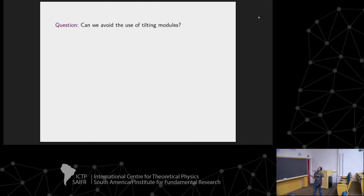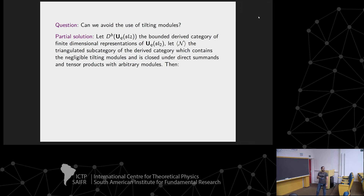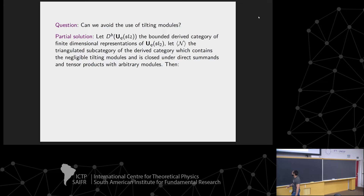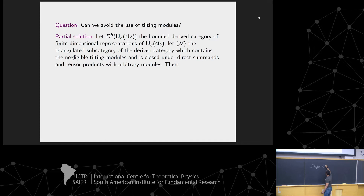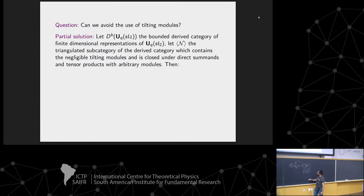The classical construction of the fusion category works by taking tilting modules and removing the negligible ones. The question is: can we do the same without tilting modules, to generalize to other categories? There is a partial answer. We need the right category of finite-dimensional representations for the quantum group at a root of unity, which is motivated by a result of Beilinson-Bezrukavnikov-Mirkovic, stating that this right category is equivalent as a triangulated category to the bounded homotopy category of tilting modules.